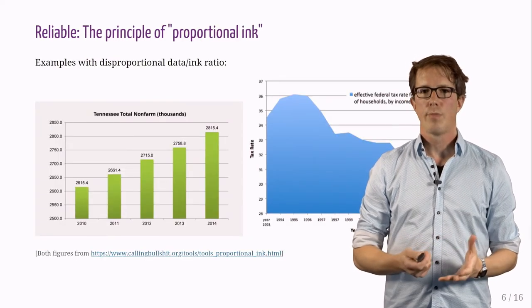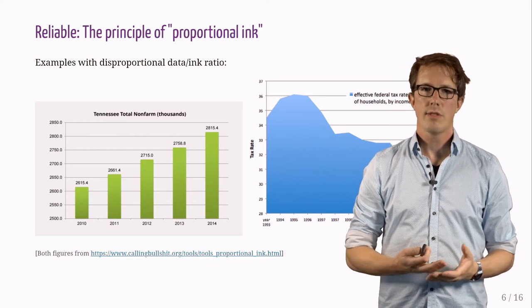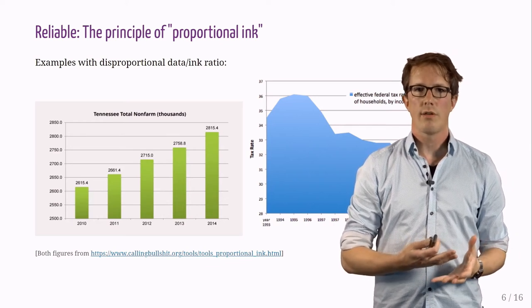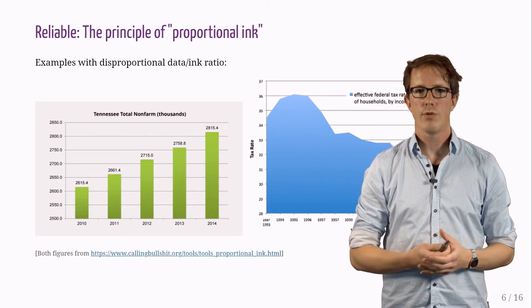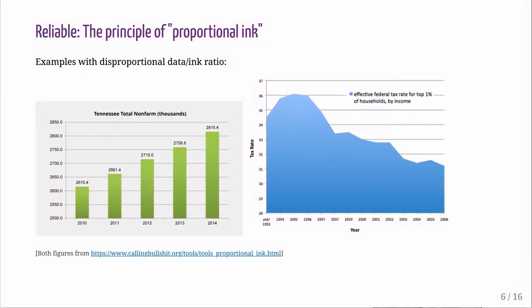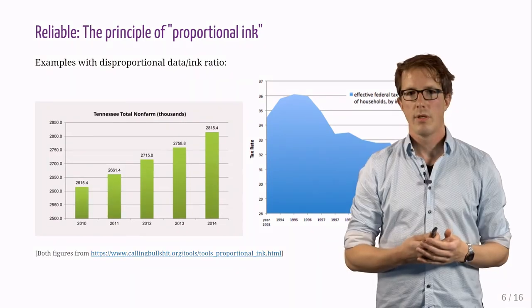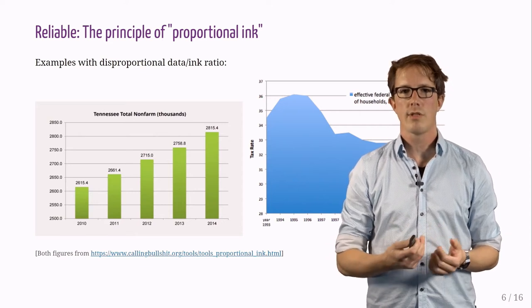We should obey the principle of so-called proportional ink. This means that the length of the bars or the area under the curve should be proportional to the values that are plotted. Here I show two examples with disproportional data to ink ratio. Note how the bars do not start at zero. Also the plot to the right does not start at zero and the representation is therefore skewed.